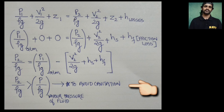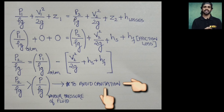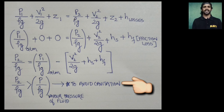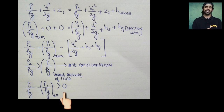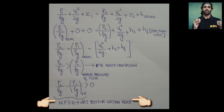If this condition is satisfied — that is, the pressure at the eye of the impeller is greater than the vapor pressure of the fluid — there will be no cavitation. If this condition is not satisfied, cavitation will occur and the pump will be damaged. Rearranging, we get: P2/ρg − Pvapor/ρg > 0. The difference between the pressure at the eye of the impeller and the vapor pressure of the fluid is always positive, and this difference is known as NPSH — Net Positive Suction Head.